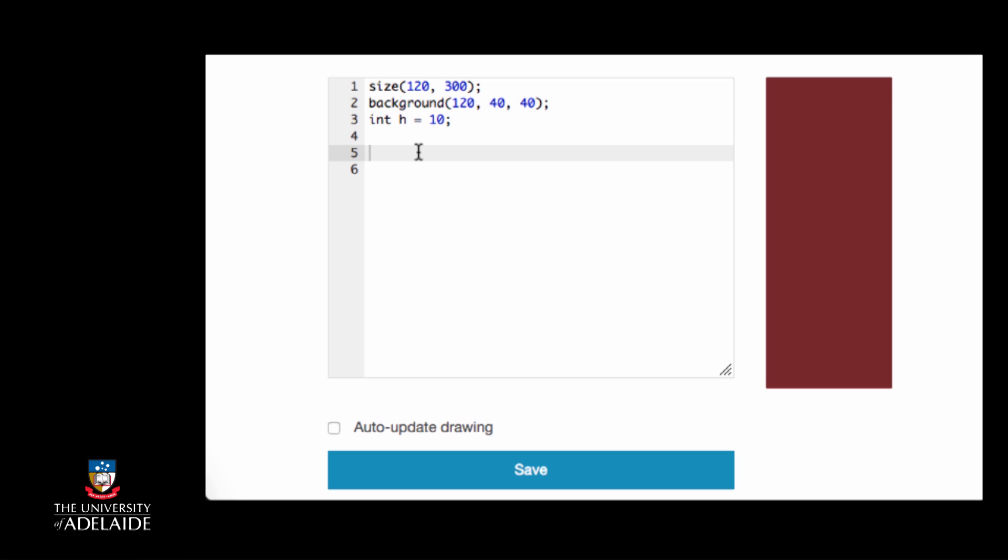Continuing on with our example, we could use our variable h in place of an expected parameter value when calling a function. So for example, we could use it in a call to the rect function to tell the rect function how high the rectangle should be.